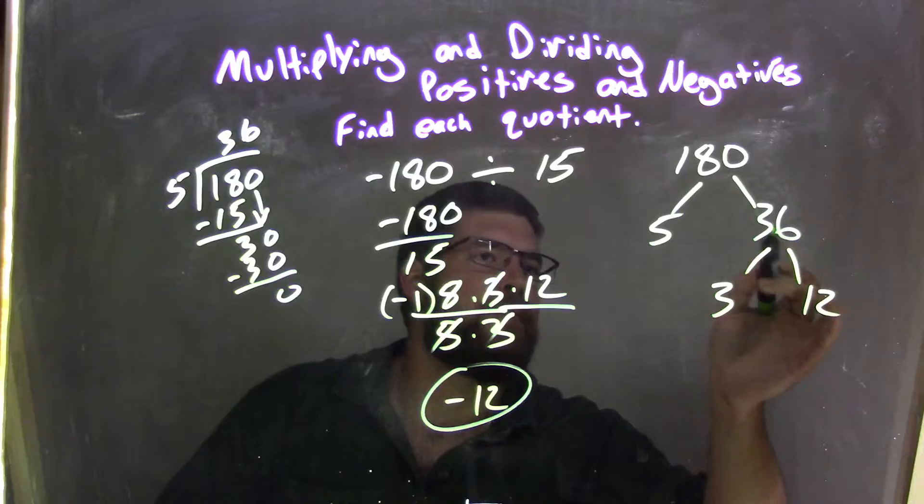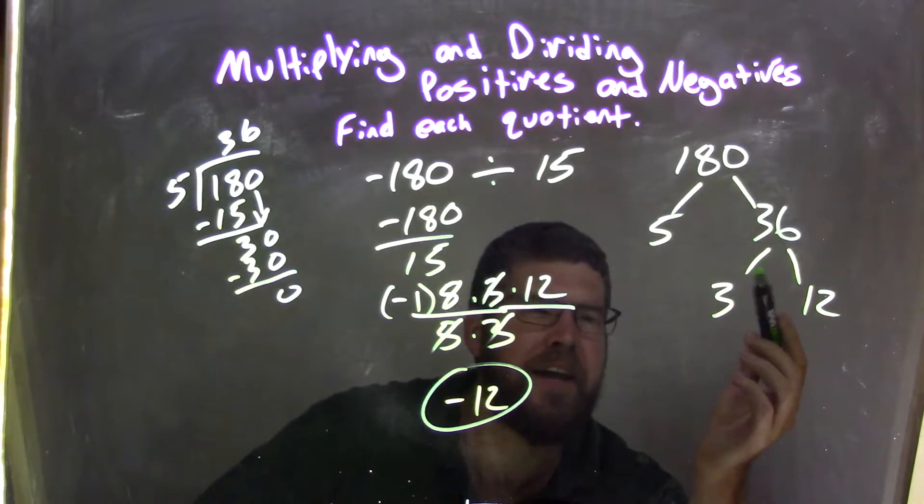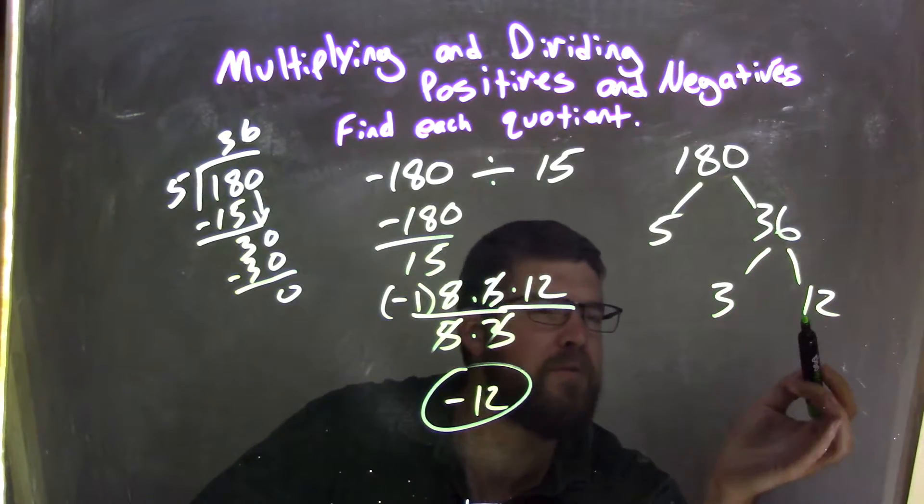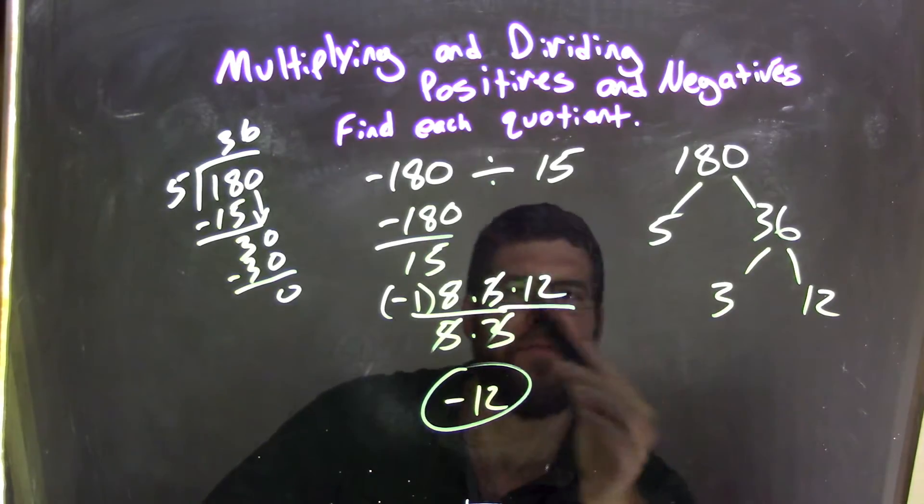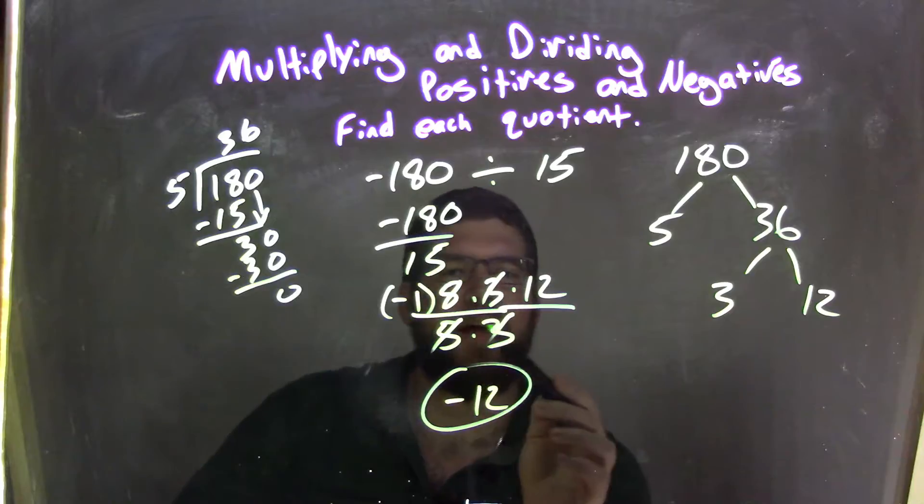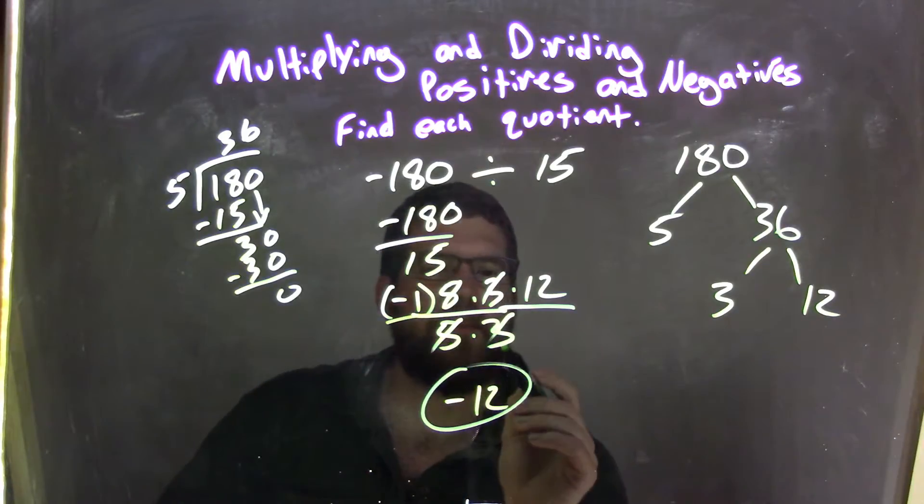Right there. Now, 5 times 36 is 180. Well, 36, quickly, I know, is 3 times 12, right? So 3 times 12 is 36, and I stopped there, because I knew 5 times 3 was 15. I recognized that. So, breaking down the denominator, right? 5 times 3 was 15.